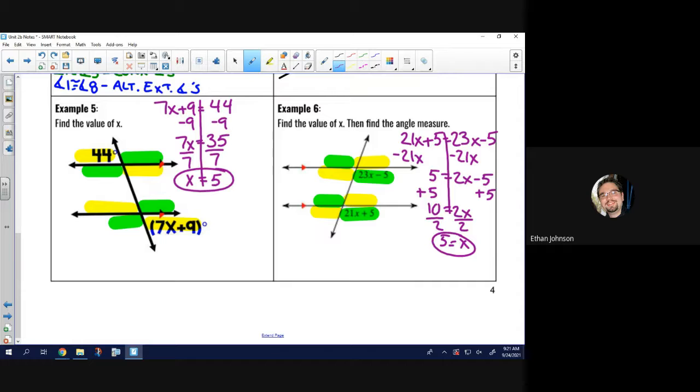Now, we would be done with the problem, except it also says, then find the angle measure. Meaning, we need to plug the 5 into one of these angles. I'll plug it into the 21x plus 5. 21 times 5 plus 5. So, 21 times 5 would be 105. Plus 5 gets us 110. And we know all of our green angles, then, are 110.